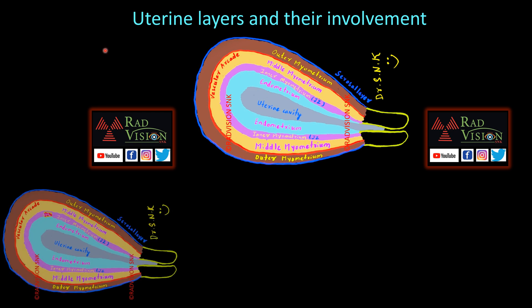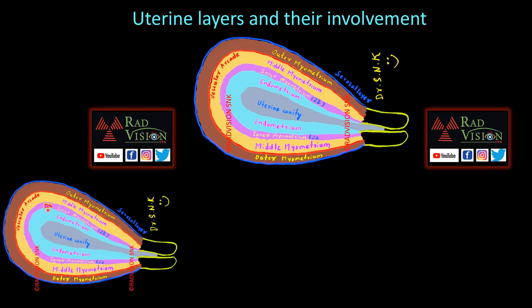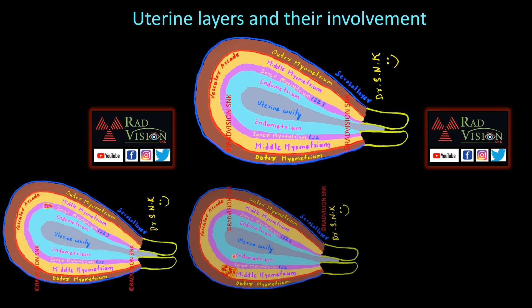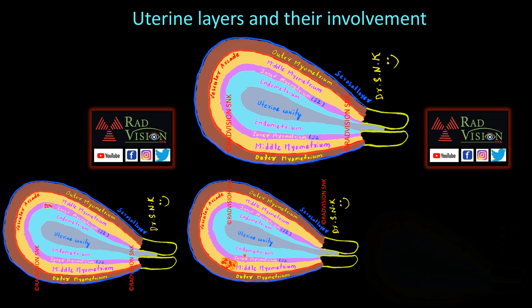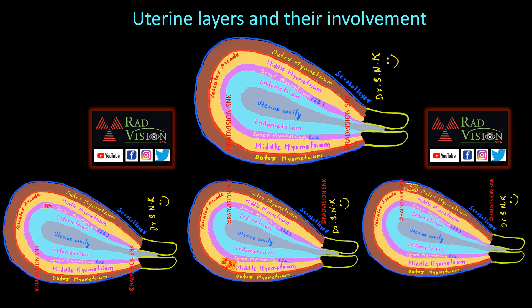Here you can see an adenomyotic lesion in the inner myometrium. Here there is an adenomyotic lesion in the middle myometrium. And here there is an adenomyotic lesion in the outer myometrium. We can describe the location of adenomyosis in the uterine layers using these illustrations.